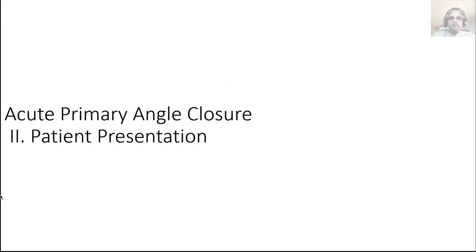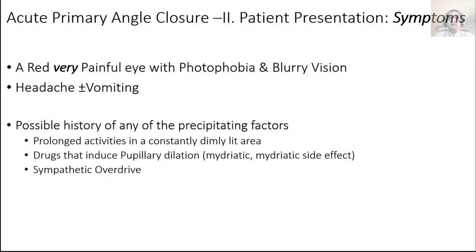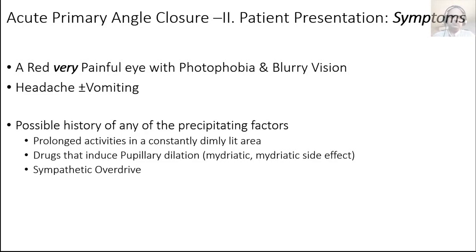How do patients with acute primary angle closure present? They present with a red and very painful eye, blurry vision, and photophobia. They also have a very severe headache and may have a history of vomiting. They might also give a history of one of the precipitating factors — for example, working for a long time in an area that wasn't well lit, or having received pupillary dilatation at a clinic.